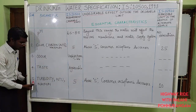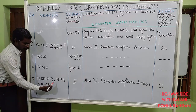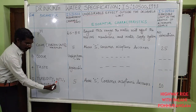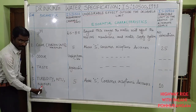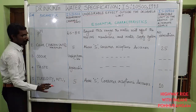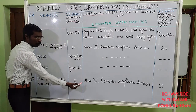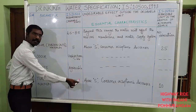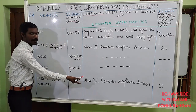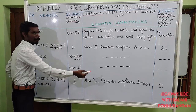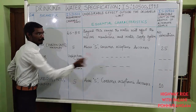The fifth essential characteristic is turbidity. We follow this as per NTU — this is the maximum limit. The desirable limit is 5. Above 5, consumer acceptance decreases. The maximum permissible limit is 10.